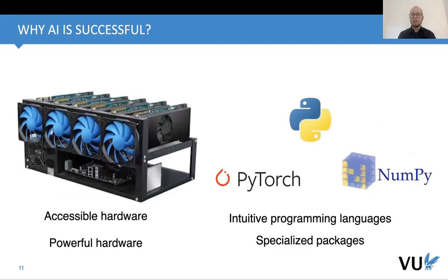Now we can say why AI is successful. We have very accessible hardware — for around 2000 euros you can buy a laptop with a GPU and already train deep architectures. We also have intuitive programming languages like Python, which is almost like writing pseudocode, and amazing packages like NumPy and PyTorch that allow us to use tensor calculus to implement our algorithms and models efficiently. These two things together are extremely important.